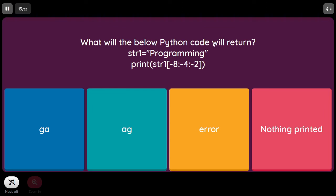What will the below Python code return? str1 equal to 'Programming', print str1[-8:-4:-2]. In this case, start (-8) is less than end (-4) but step is negative, so nothing will be printed.